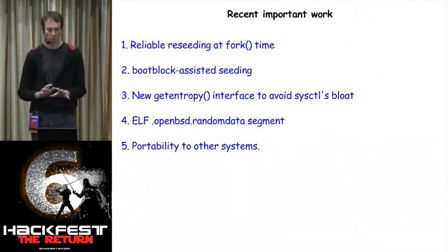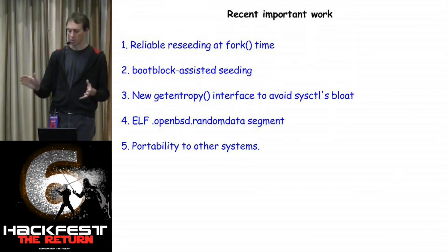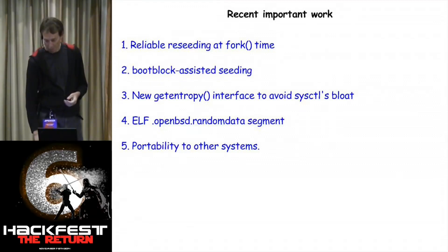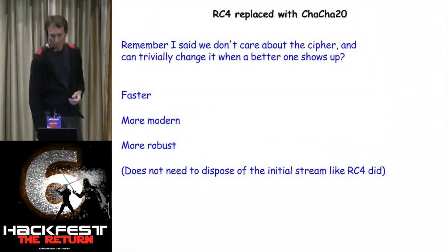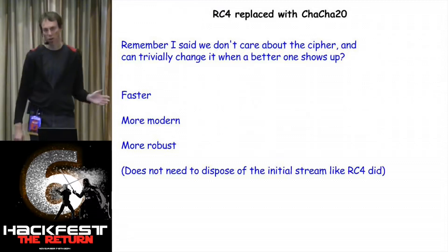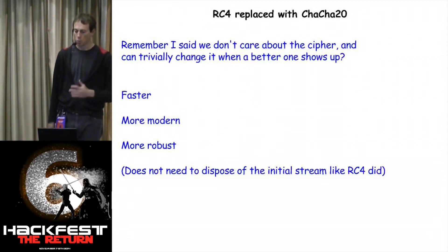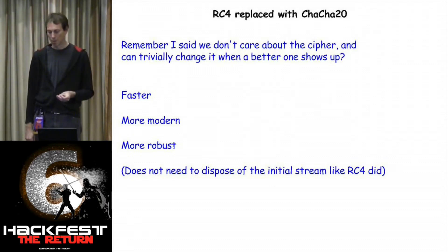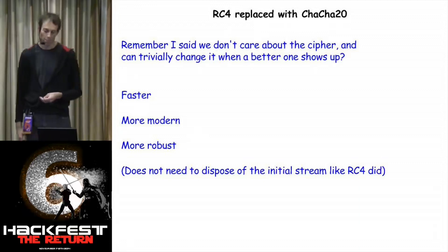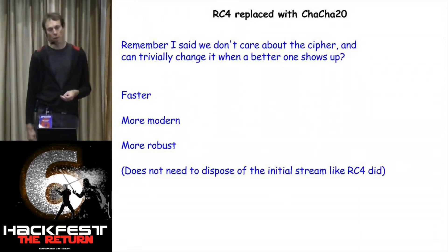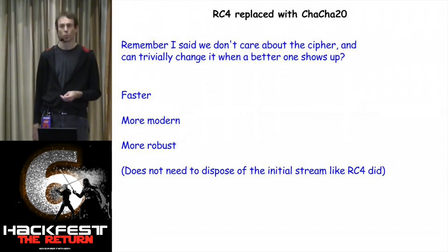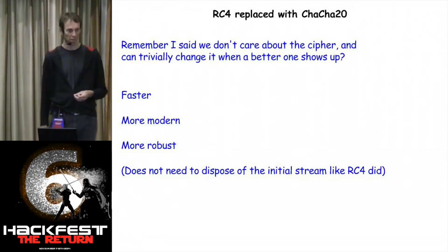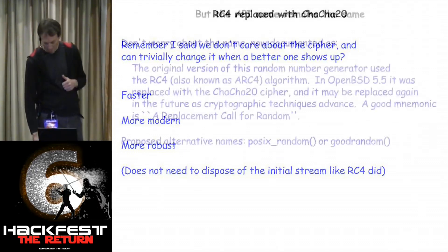The recent work has focused on making reseeding reliable, the boot block seed infrastructure I described, and portability to other subsystems because of LibreSSL. Remember I said we don't care about the cipher — well, we do care, it just wasn't the primary issue. We did change it recently to ChaCha — it's faster, it's a more modern algorithm with stronger guarantees, and the workaround we had for RC4 where we threw away the initial part of the stream due to an RC4 weakness has been eliminated. arc4random is now roughly one-seventh the speed of memset — that's pretty fast random.